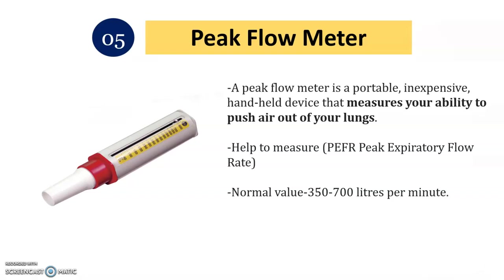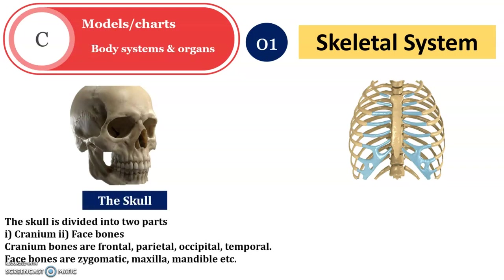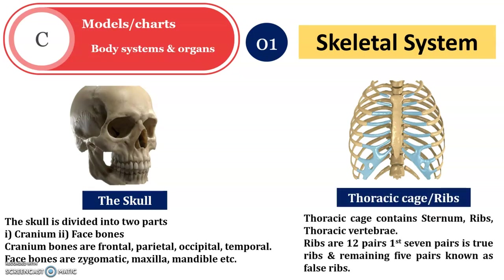Now let us move to Part C — models and charts covering different systems and organs from the syllabus. The first is the skeletal system. Spot number one is the skull, which contains two parts: the cranium and the face bones. Spot number two is the thoracic cage or ribs. The ribs connect to the sternum, the central bone, which protects major organs like the heart and lungs.